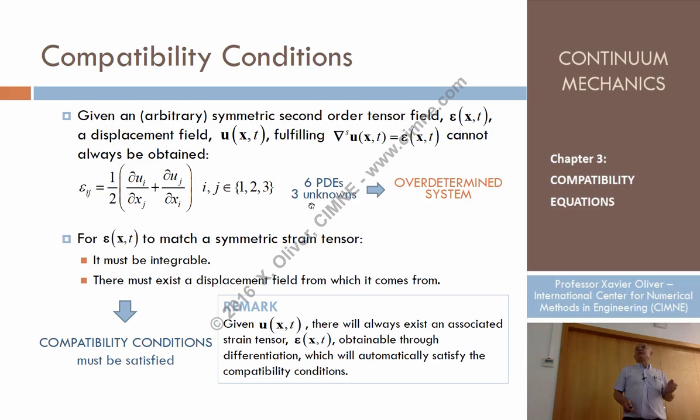So it's not difficult to say that in general, we won't be able to solve this problem: given epsilon, find u. Given u, find epsilon is just a problem of differentiation, always can be done. But given epsilon, find u, that's not in general possible.